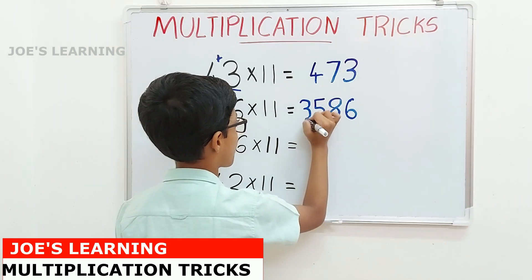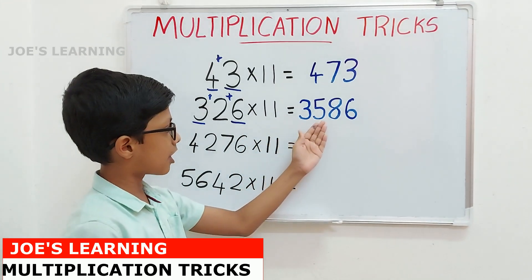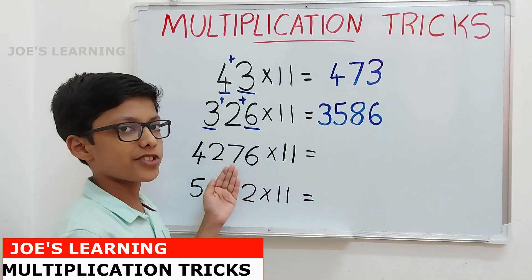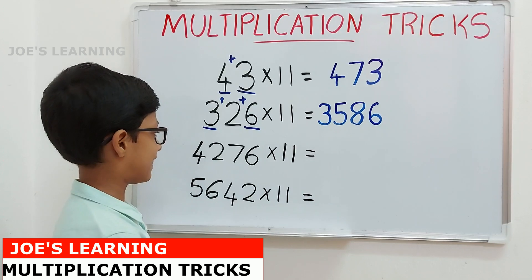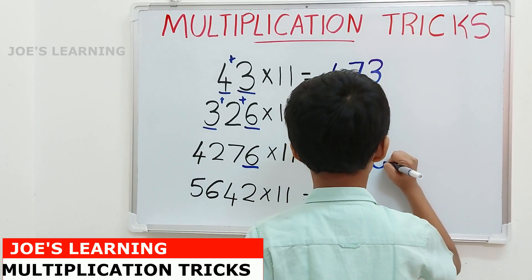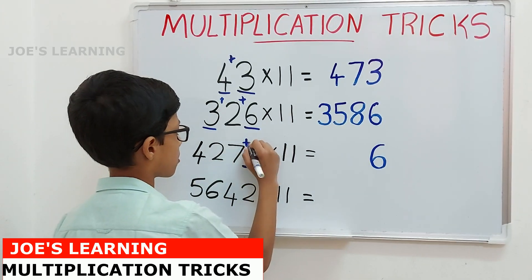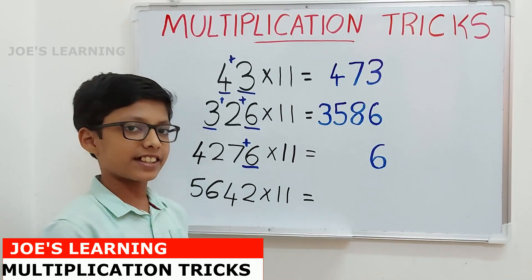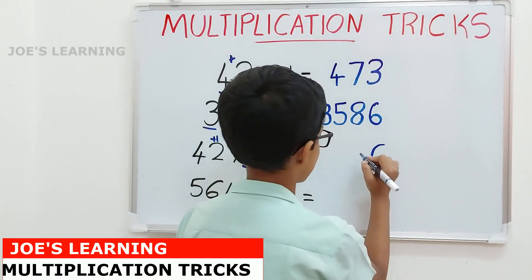We look at the first digit, which is 3, and write that down, so 326 × 11 equals 3586. Now let us move on to 4276 × 11. First we write down the last digit, which is 6. To find the next digit, we add 6 and 7, which equals 13. But since we can only write one digit, we carry over the 1 to the next position and write down 3.